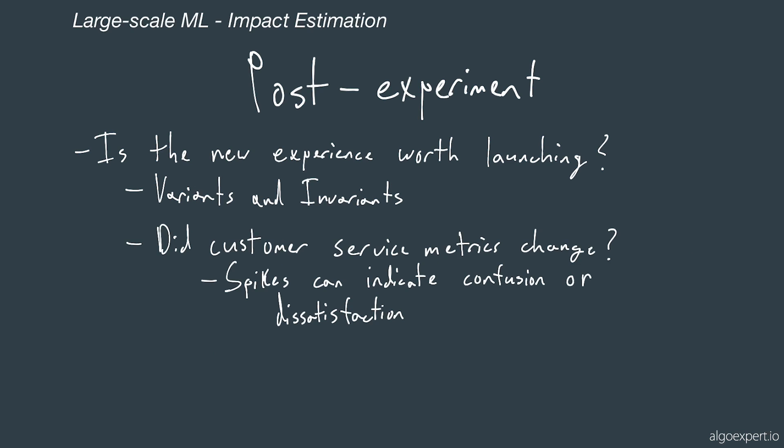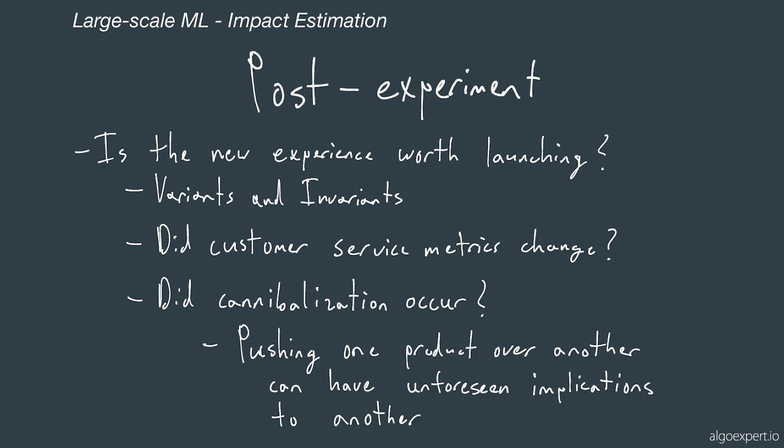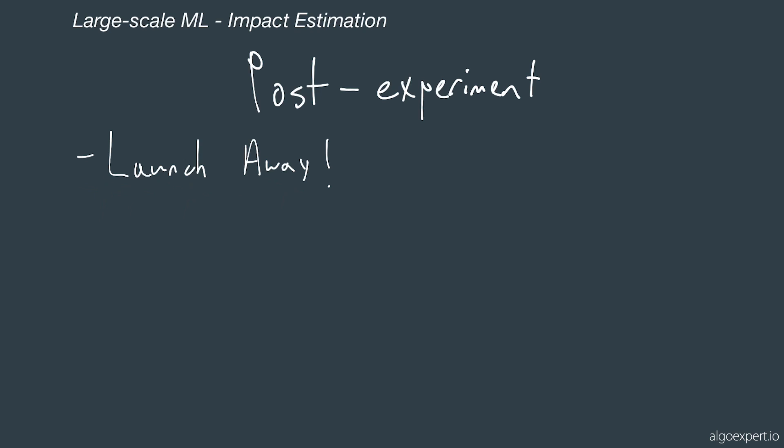It's also nice to look at whether customer service metrics changed — were there spikes in calls, emails, or messages to customer support? This can indicate confusion or dissatisfaction with the new experience. Next, did any cannibalization occur? A new algorithm that recommends one product over another can have unforeseen implications — even if sales for a particular item went up, it could negatively impact the sales of another item. If we did everything in the pre-experiment and we're comfortable with everything post-experiment, this is most likely an indication that we can launch. This wraps up the impact estimation video in the large-scale machine learning section of ML Expert. Thanks for joining, and we'll see you next time.